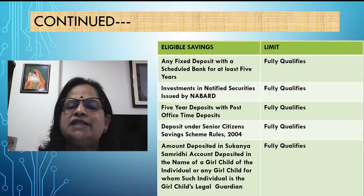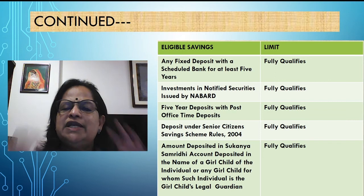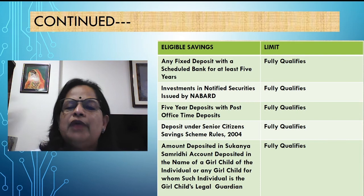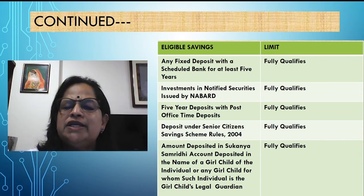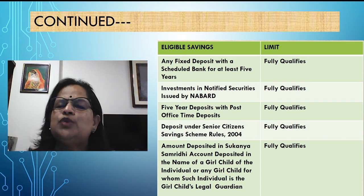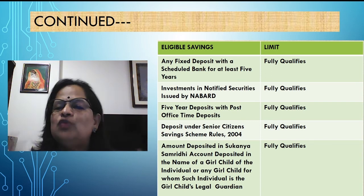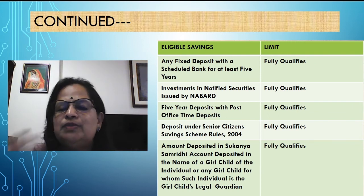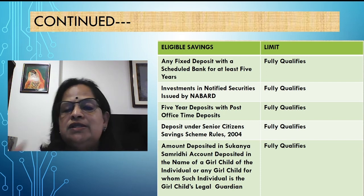Deposit under Senior Citizens Savings Scheme Rules 2004 also fully qualifies. Amount deposited in Sukanya Samriddhi account — deposited in the name of a girl child of the individual or any girl child for whom such individual is the legal guardian — fully qualifies for 80C deduction. The government is giving so much importance to education of the girl child and empowering the girl child. This is a special initiative of the central government, introduced by the BJP government at the centre.